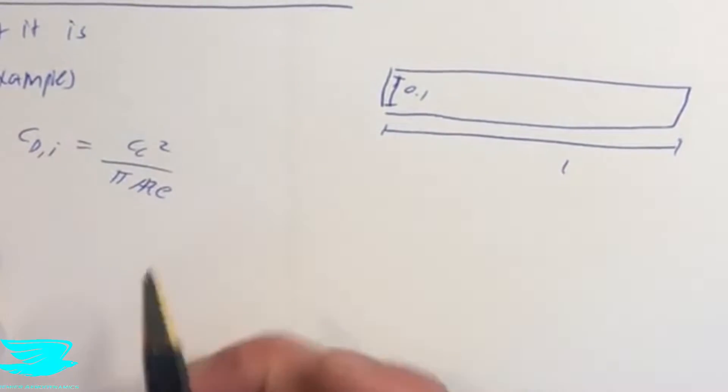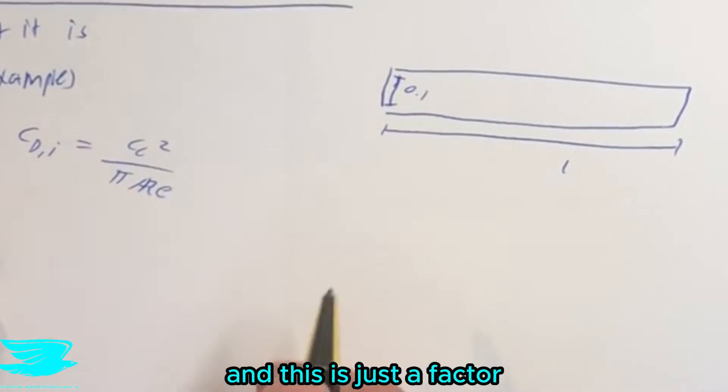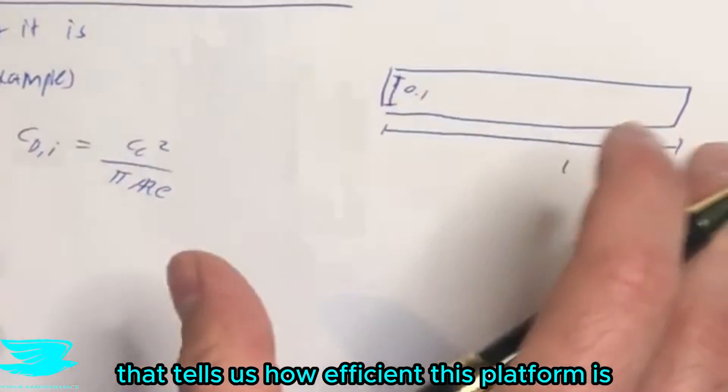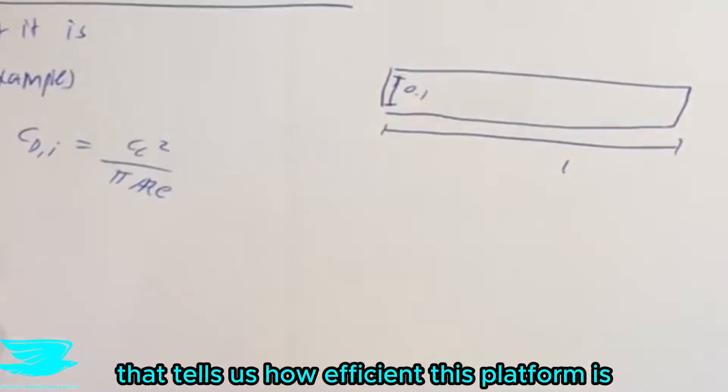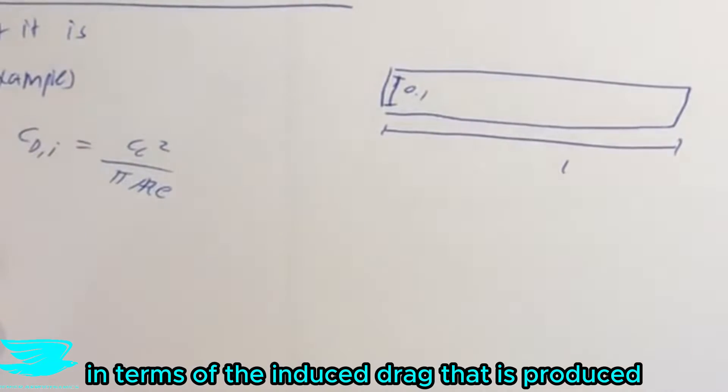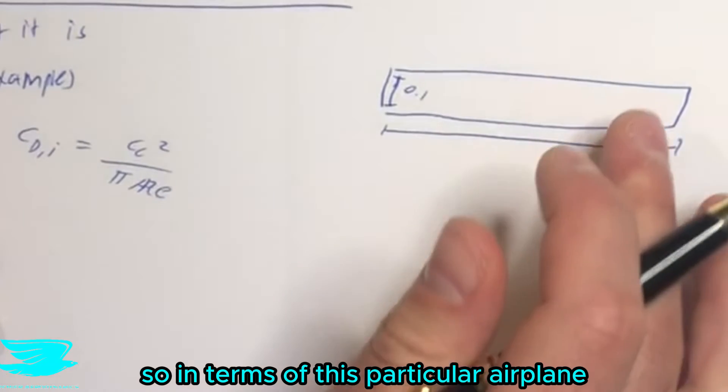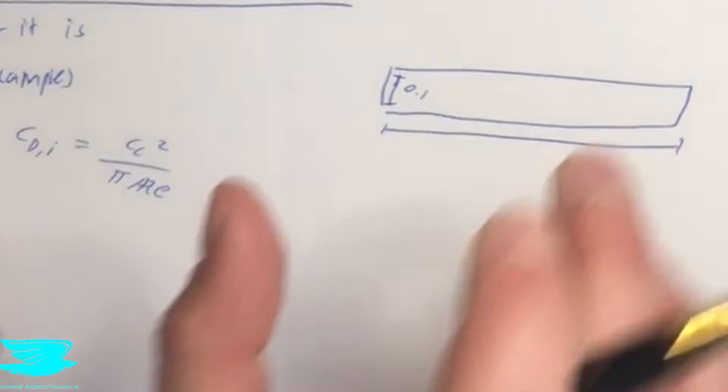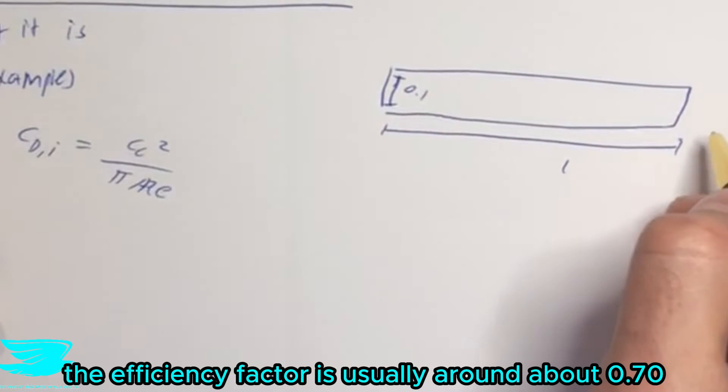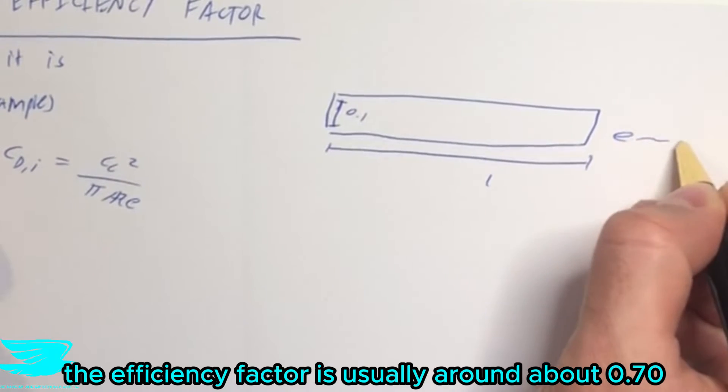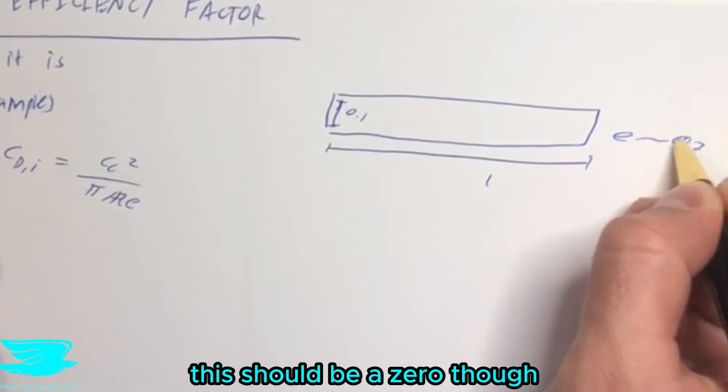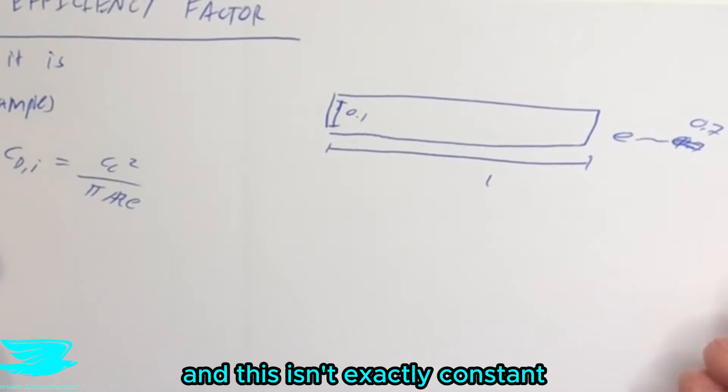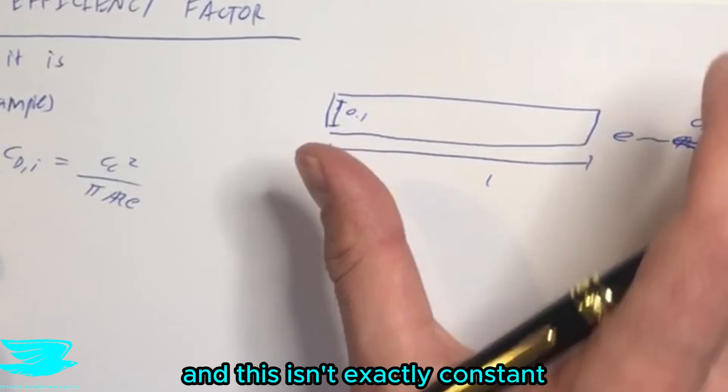That gives us the aspect ratio, here it would be 10. And E is now the Oswald Efficiency Factor, and this is just a factor that tells us how efficient this planform is in terms of the induced drag that is produced. So in terms of this particular airplane, a rectangular one, the efficiency factor is usually around about 0.7. And this isn't exactly constant.